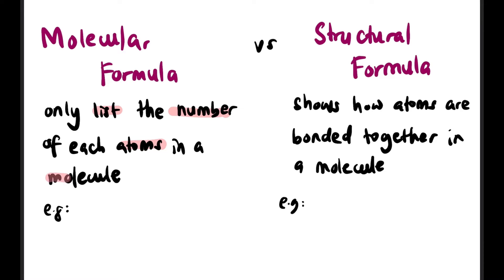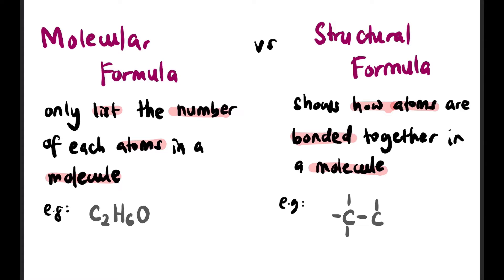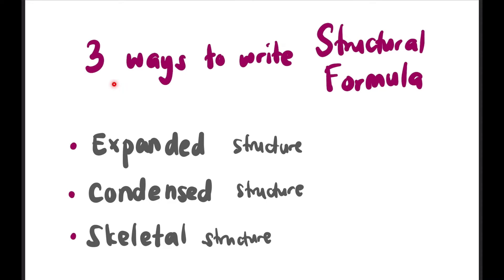Now we will learn about structural formula. Before that, we've already heard about molecular formula. Molecular formula only shows what atoms are present and how many there are in a compound. Structural formula, on the other hand, shows how the atoms are bonded together in a molecule. For example, molecular formula C2H6O has two carbons, six hydrogens, and one oxygen. Structural formula shows how every carbon, hydrogen, and oxygen is bonded together — typically carbon in the middle and hydrogen at the terminal ends.